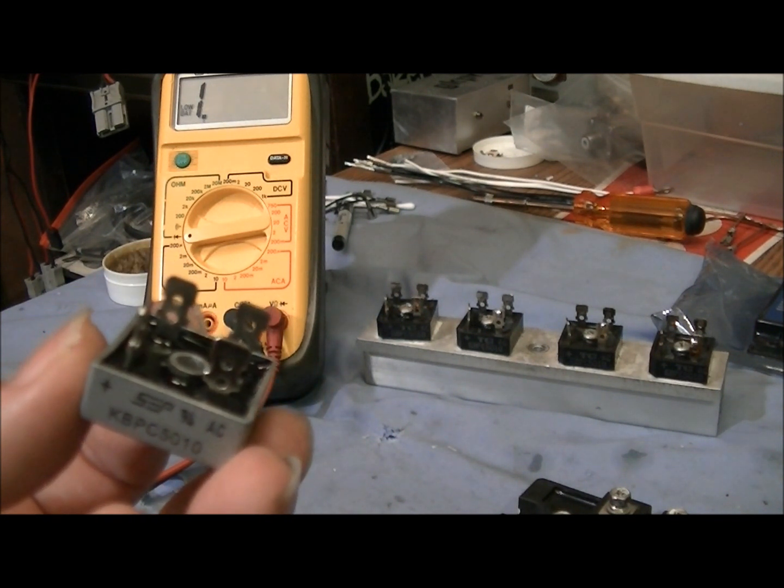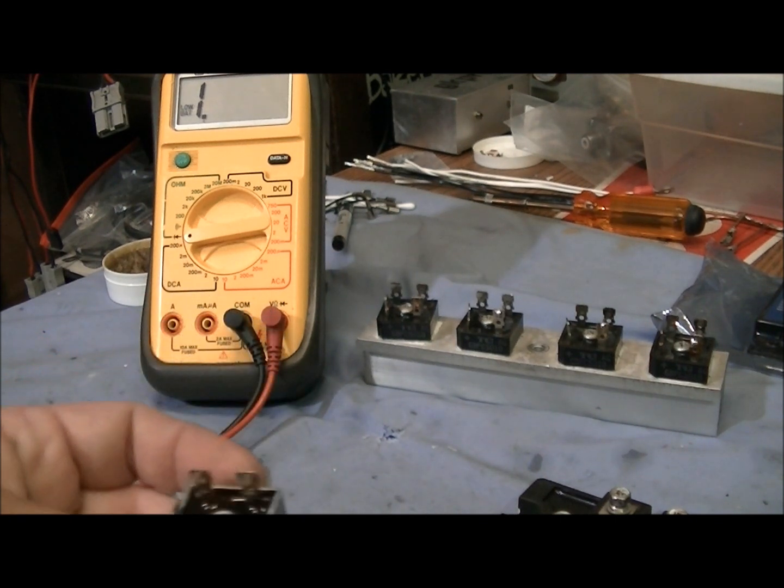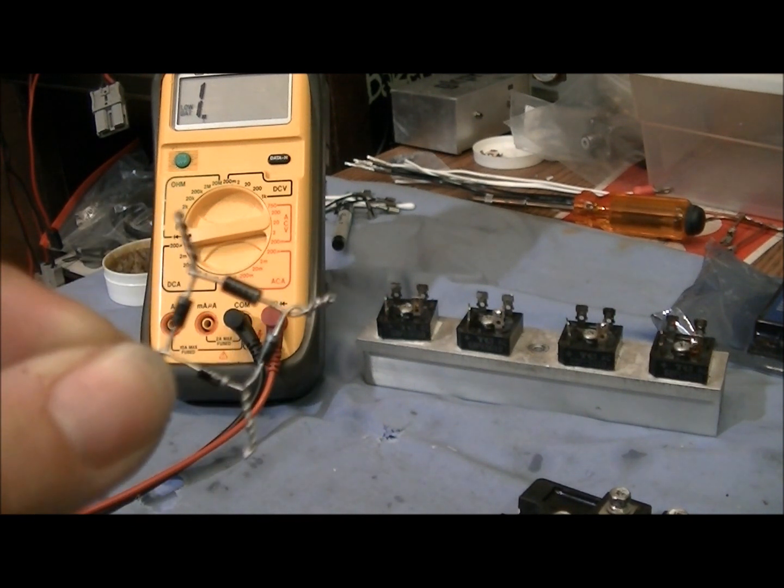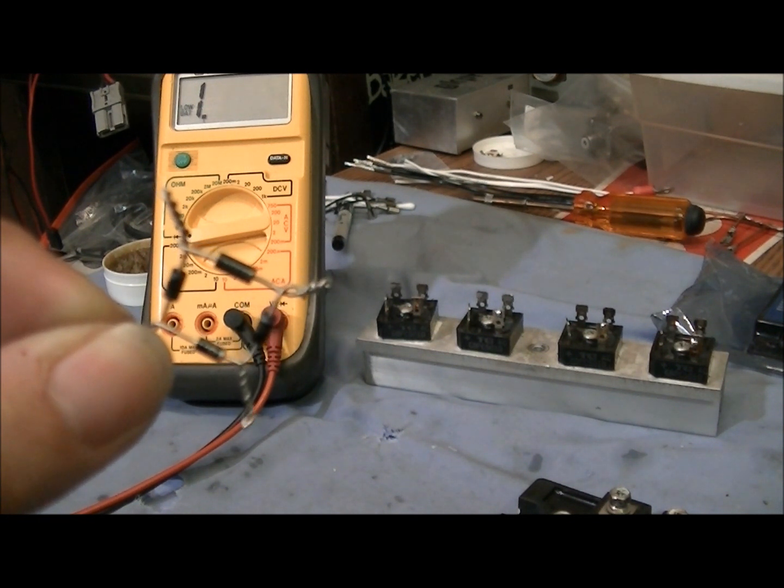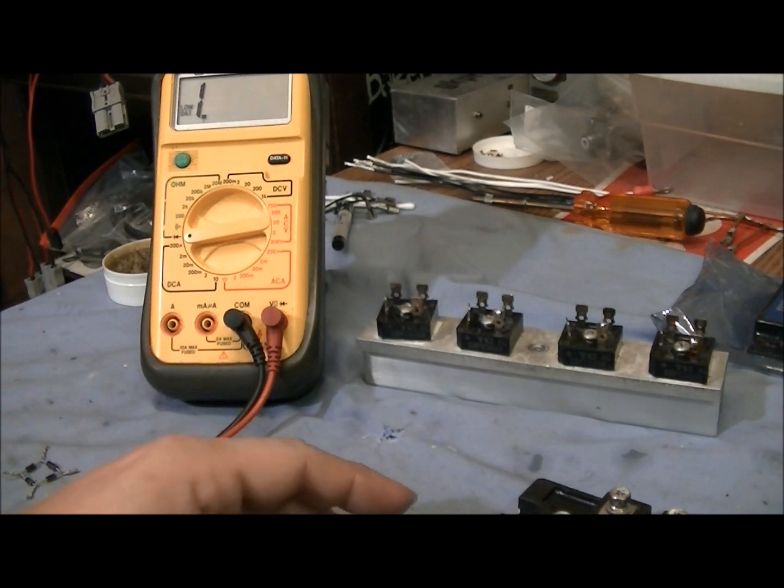All a bridge rectifier is is four diodes in a specific configuration like this. This right here is a bridge rectifier at its simplicity. You're looking at four diodes in a certain configuration.